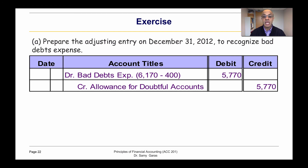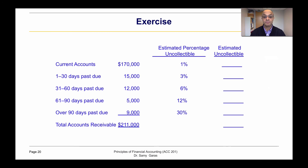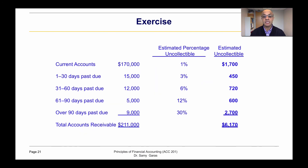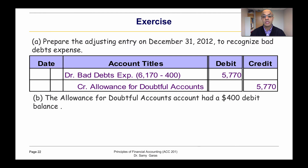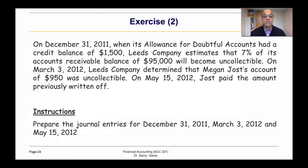For part B, it says we have a debit balance of 400. In this case we need to add it, so we debit bad debt expense by the total of 6,570 and credit allowance by the same amount.